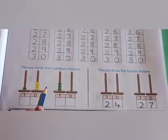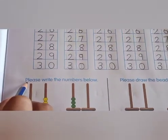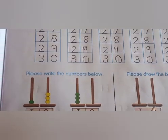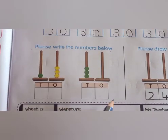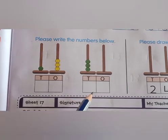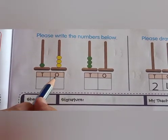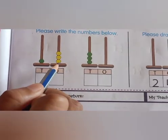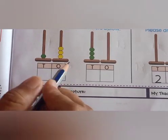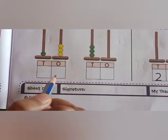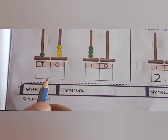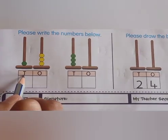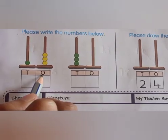Now students, see here. Please write the numbers below. Students, what do you have to do here? Here you have to count the bits and write the correct number in these boxes. T means 10 and O means ones.